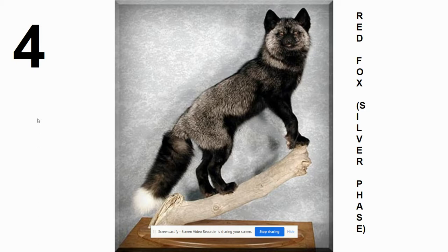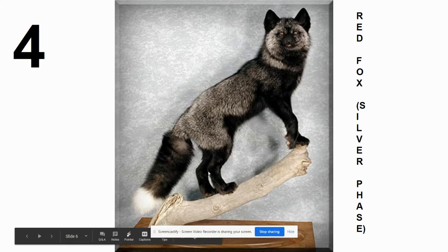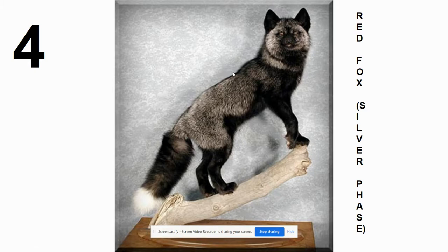Number four, believe it or not, is also a red fox. Technically this is called the silver phase of the red fox. We still have the white tail tip and the black legs and black ears. It's just that we're lacking the red or orangish pigment in the fur. Instead, it's almost frosted with a silver-black toward the root, which gives it the silver phase name.